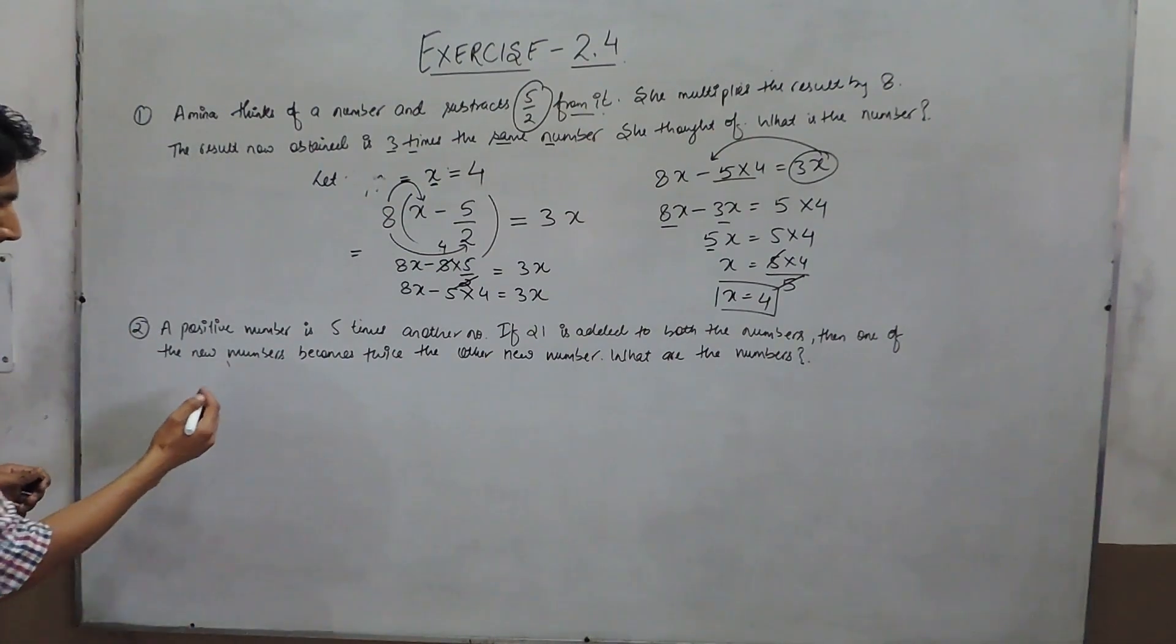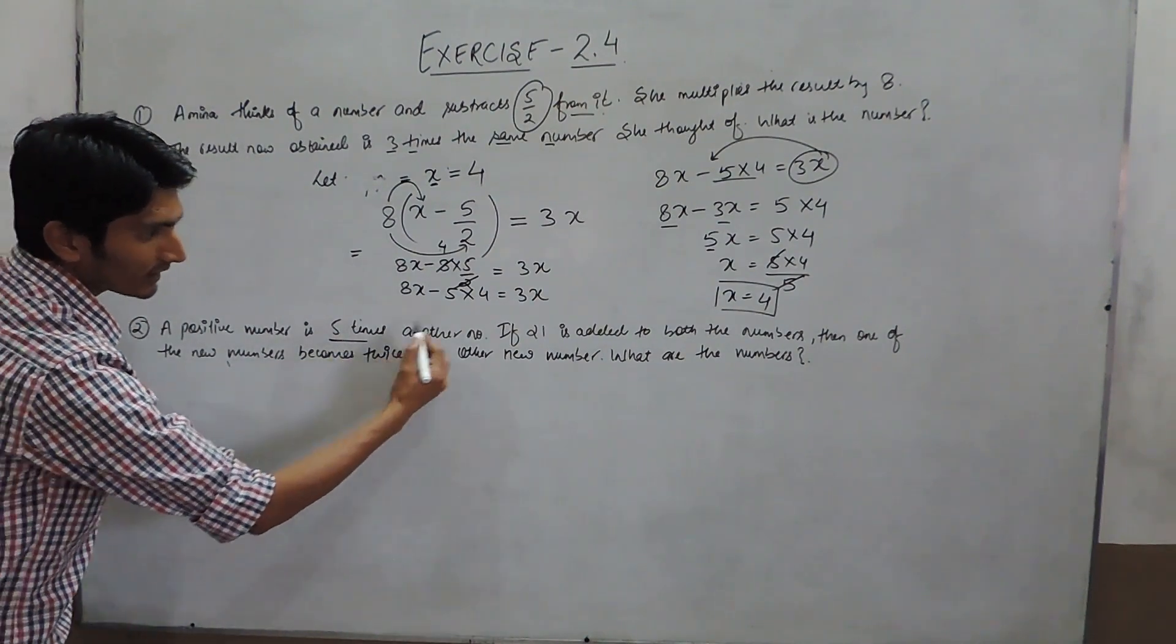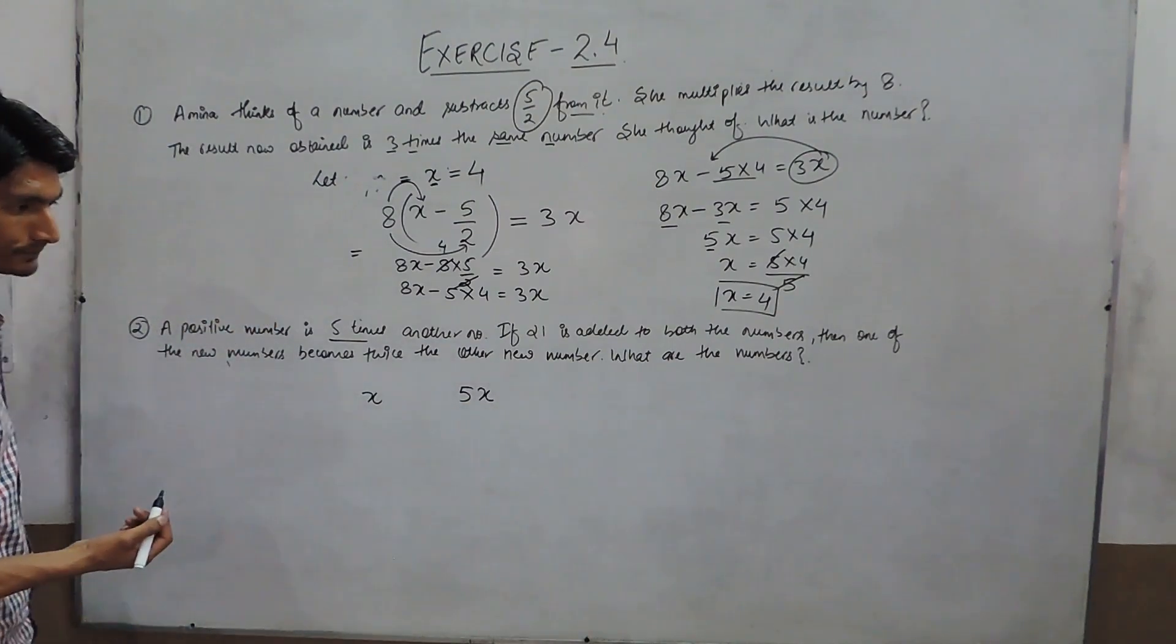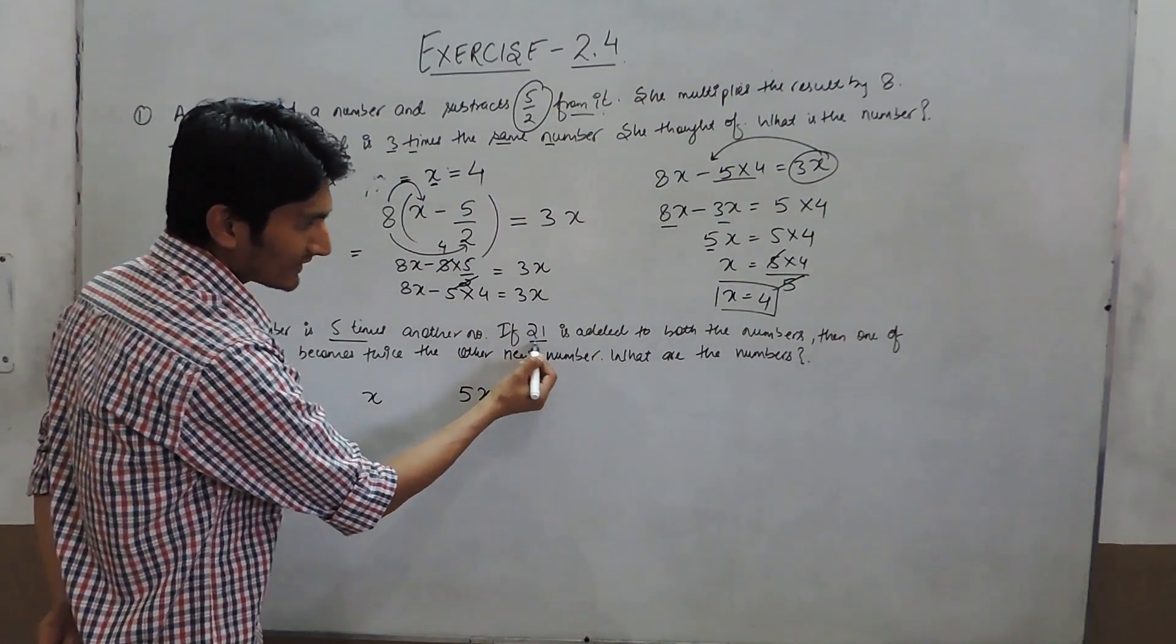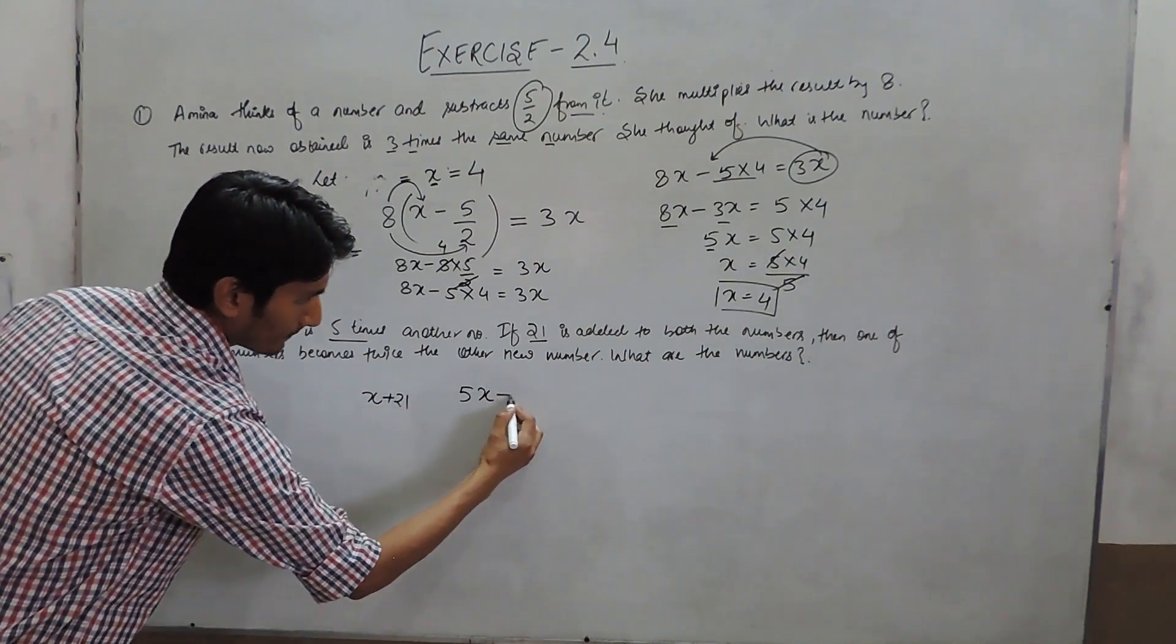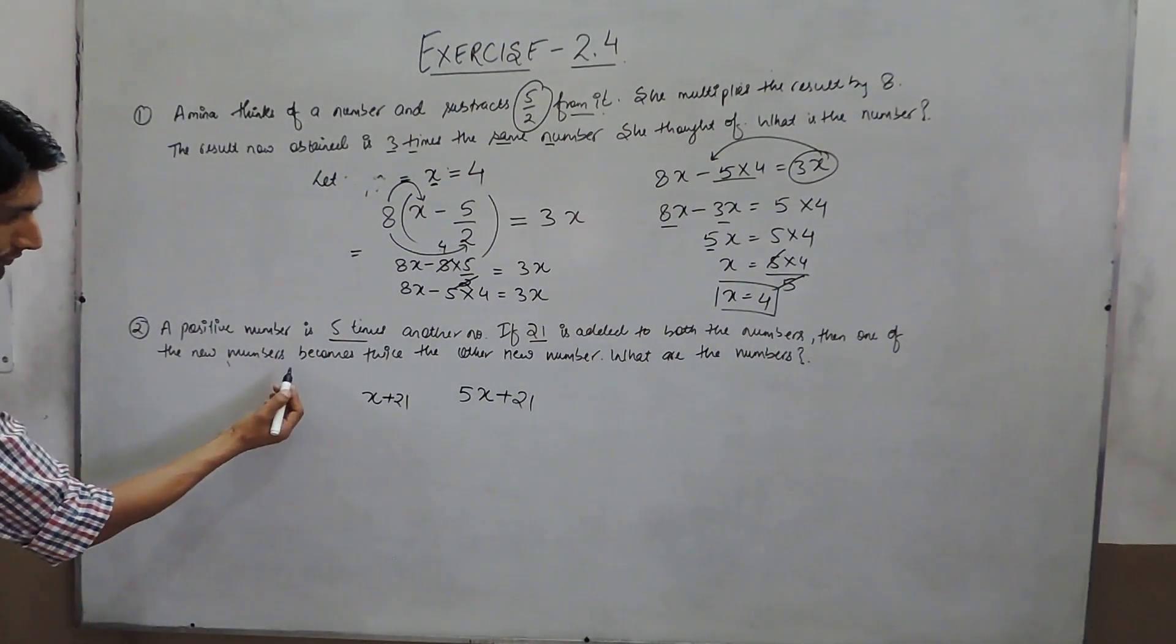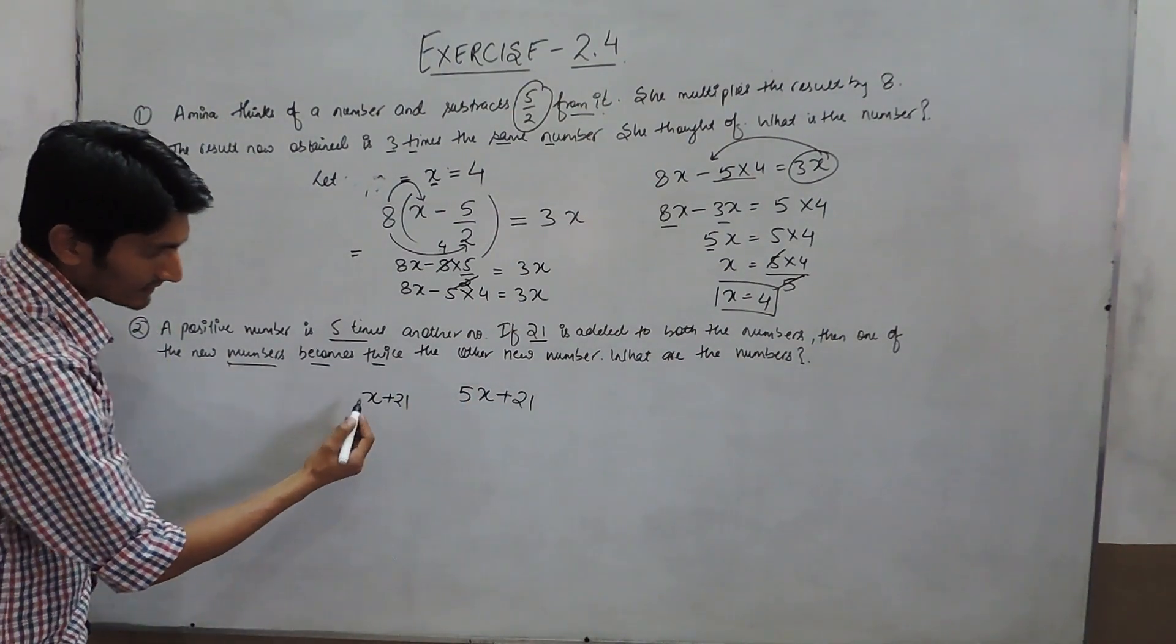In this question, you are given two numbers, one of which is 5 times the other. So if one is x, the other should be 5x. It is given that if 21 is added to both numbers, one of the new numbers will become twice the other.